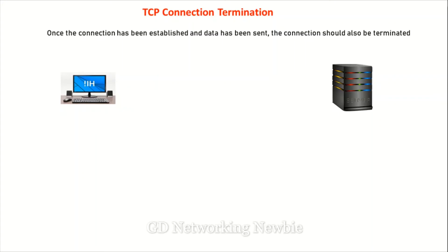In data communication, when two nodes need to exchange data — for example, when a client wants to send something to a server — this is the job of the transport layer and the TCP protocol. TCP establishes a connection composed of two one-way TCP sessions: one from client to server and one from server back to client. Once both sides have sent their data, those two one-way TCP sessions should be closed.